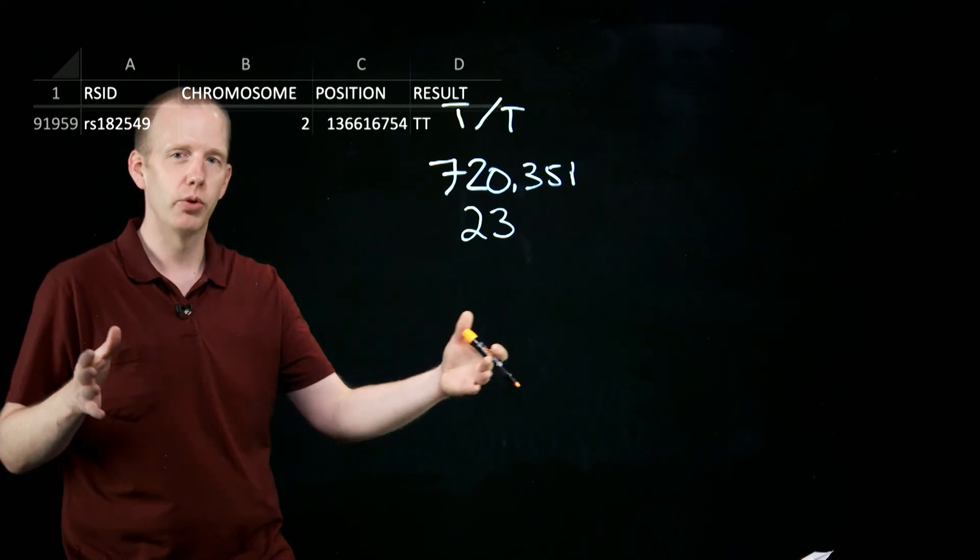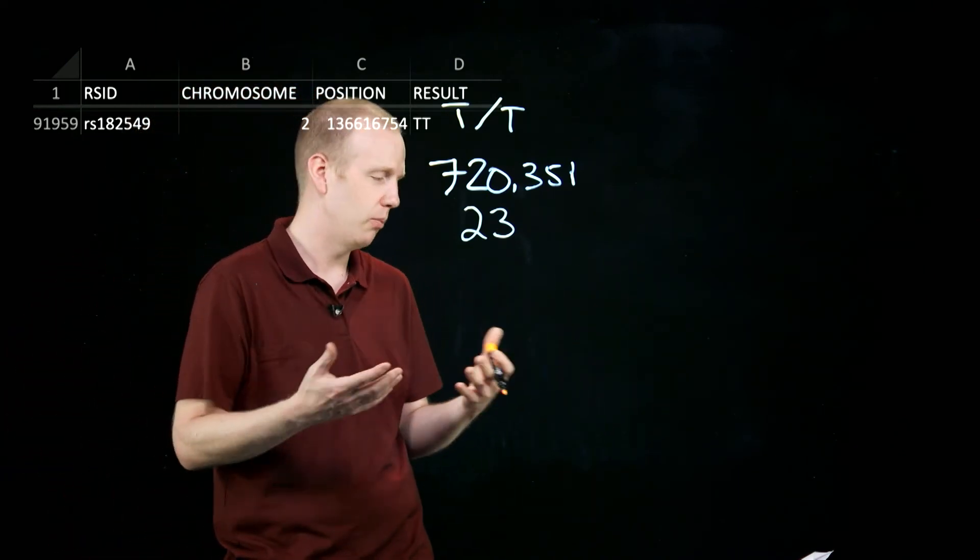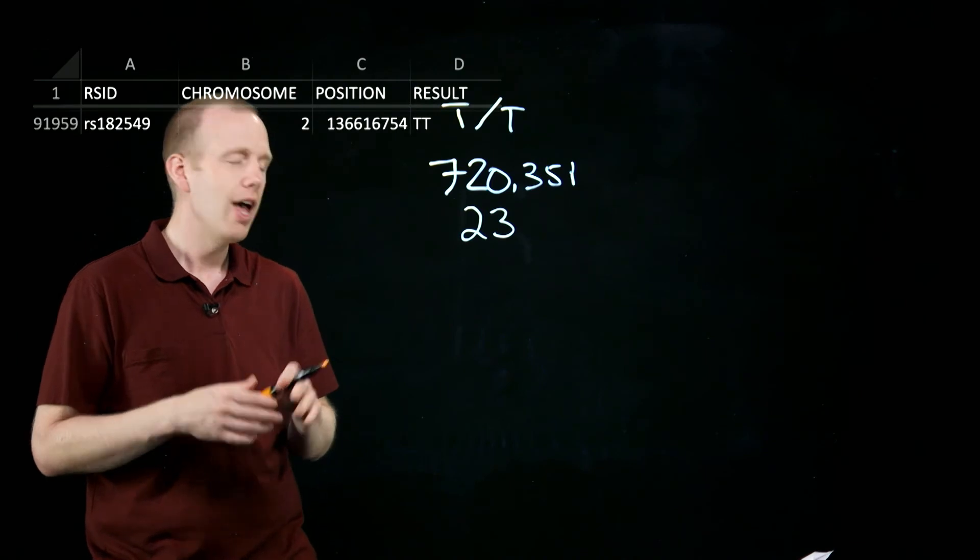But the distribution of single nucleotide polymorphisms, mutations across the chromosomes is pretty much equal.